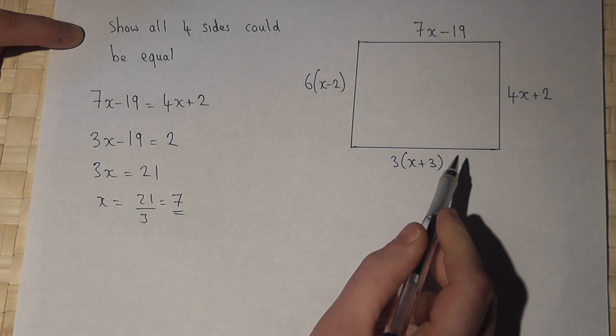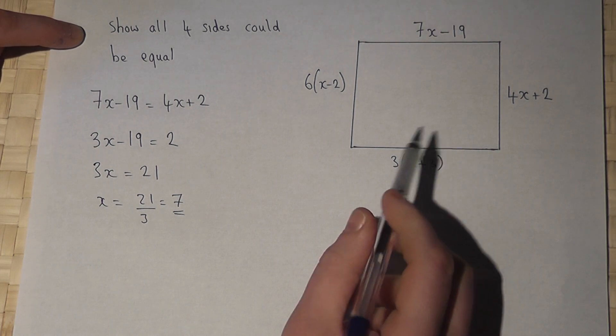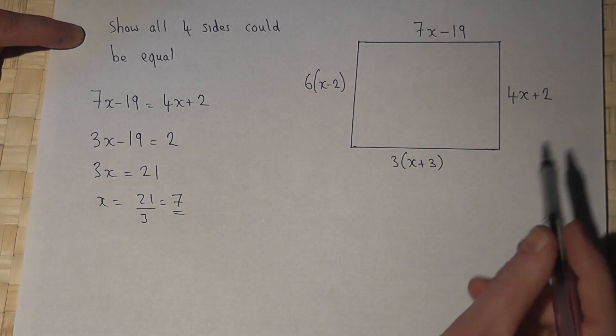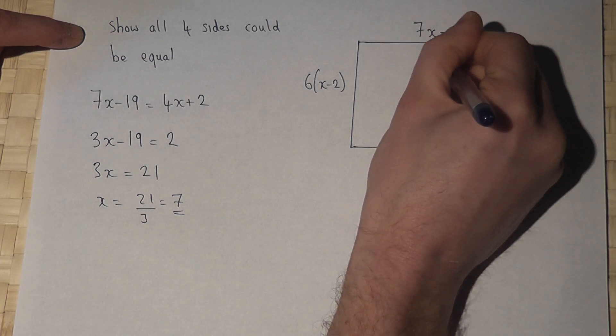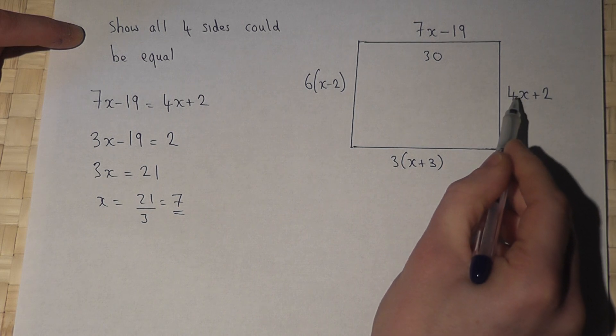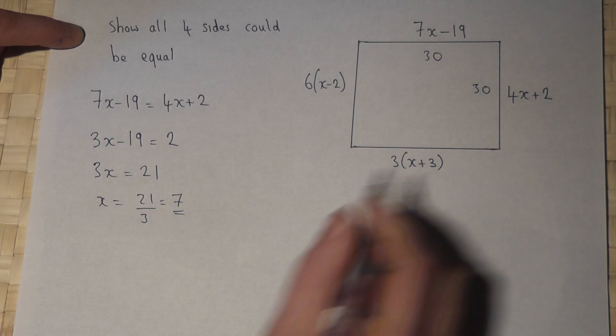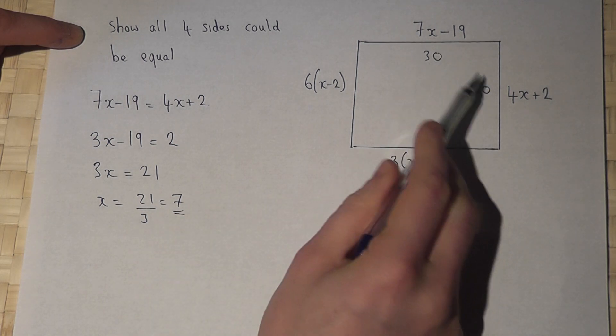So when x is 7, 7 times 7 are 49, take 19, we get 30. And when x is 7, 4 times 7 is 28, plus 2 is also 30. So when x is 7, they are both the same length.